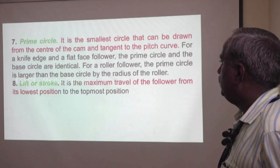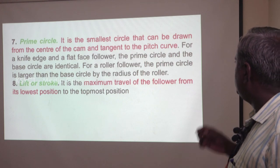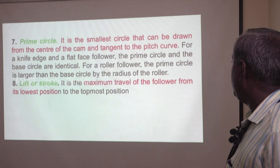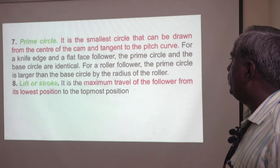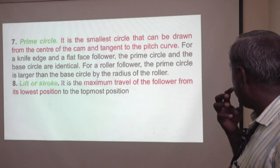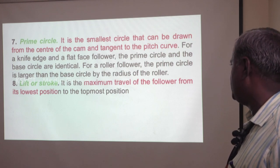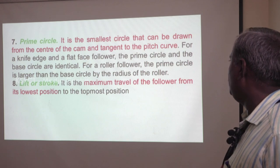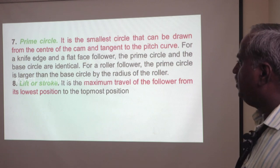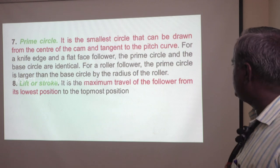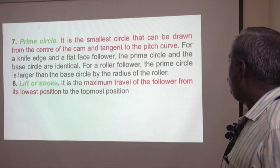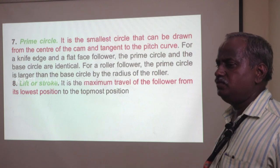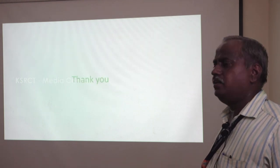Pitch point is the point on the pitch curve having the maximum pressure angle. Pitch circle is a circle drawn from the center of the CAM through the pitch points. Pitch curve is the curve generated by the trace point as the follower moves relative to the CAM. For a knife-edge follower, the pitch curve and CAM profile are the same, whereas for the roller follower, they are separated by the radius of the follower. Prime circle is the smallest circle drawn from the center of the CAM to the pitch curve. For the knife-edge follower, the prime circle and the base circle are identical; for a roller follower, the prime circle is larger than the base circle by the radius of the follower. Lift or stroke is the maximum travel of the follower from its lowest position to its topmost position.